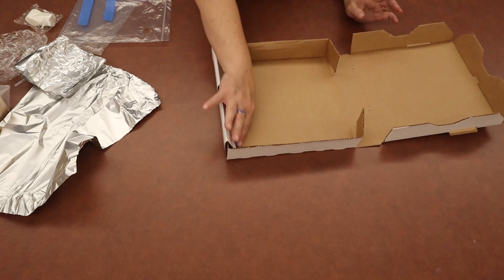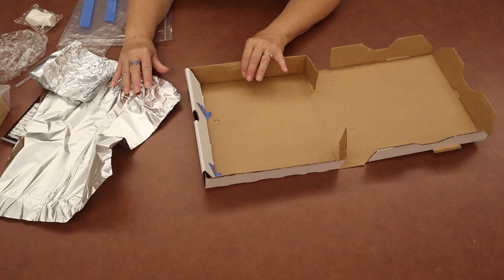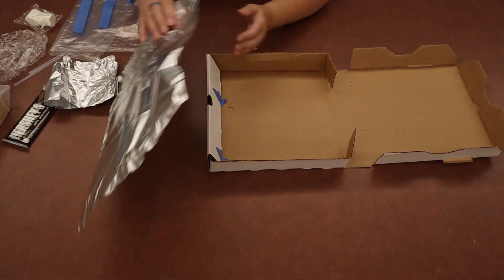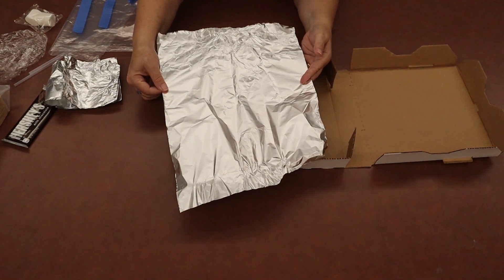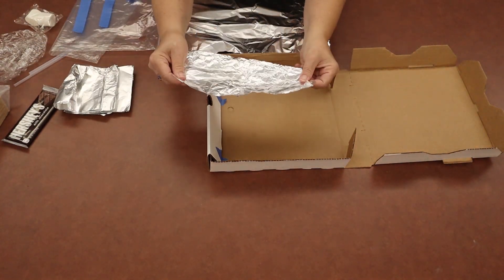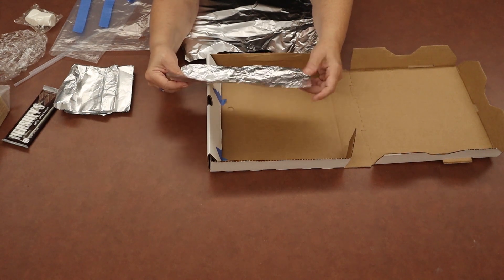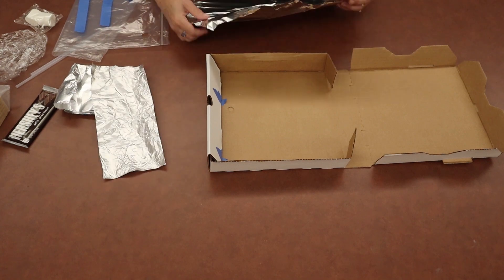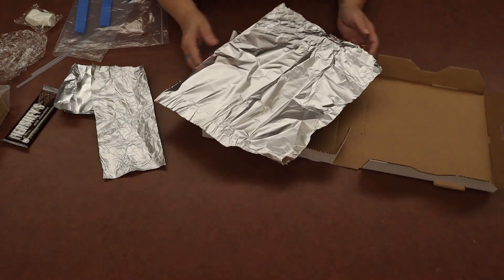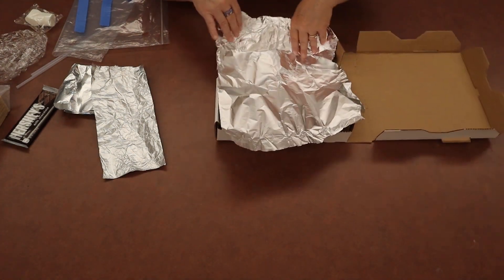The next step will be taking your foil and lining your oven. Now your take and make bags will have either full sheets of foil like this, or you may have some smaller strips of foil like this. Either foil is going to work for your project. So just know that it's not going to affect the outcome.